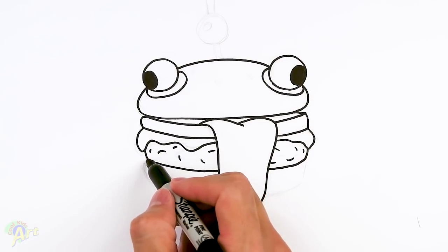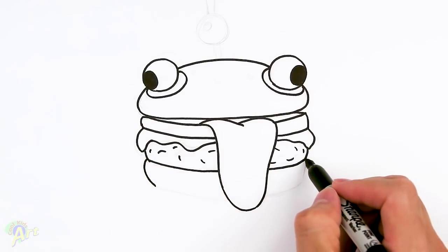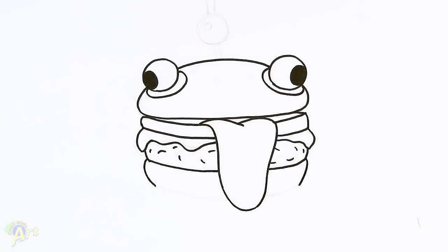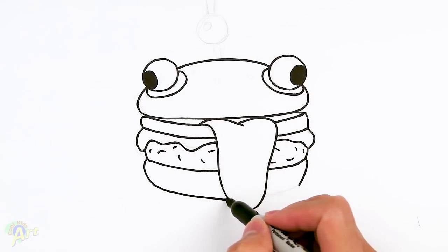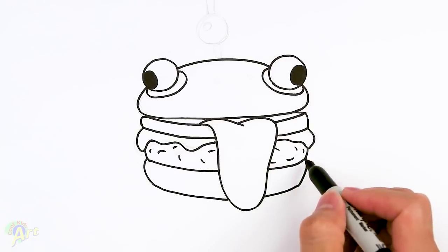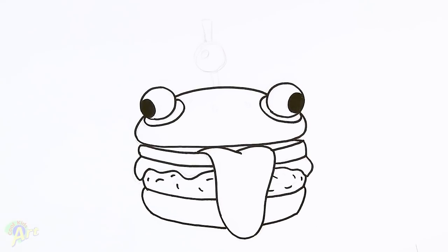Okay, so now let's draw in the bun on the bottom, so this one's easy. Just kind of curve out. And then we're just gonna close it off with a nice curve, just like the top curve. And that's pretty much it for the burger.